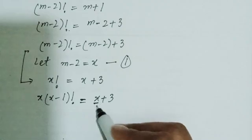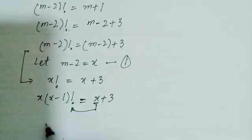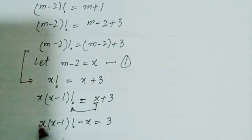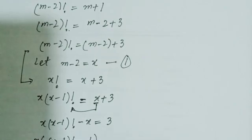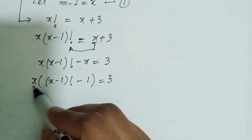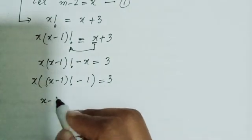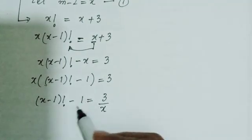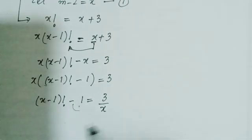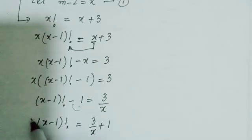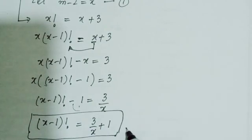Now I am going to shift x to the left-hand side: x times (x minus 1) factorial minus x equals 3. Taking x as a common factor: x times [(x minus 1) factorial minus 1] equals 3. Dividing both sides by x: (x minus 1) factorial minus 1 equals 3 over x. Shifting minus 1 to the right: (x minus 1) factorial equals 3 over x plus 1. This is equation number 2.